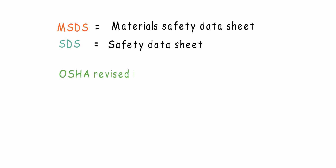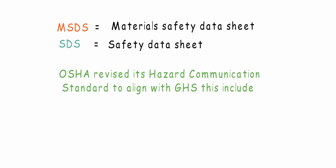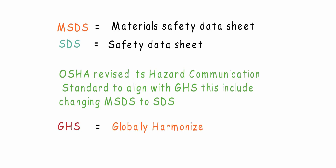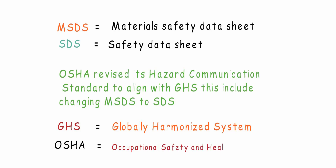This change happened when OSHA revised its hazard communication standard to align with GHS, which included changing MSDS to SDS. GHS is the Globally Harmonized System for classification and labeling of chemicals, and OSHA is the Occupational Safety and Health Administration.